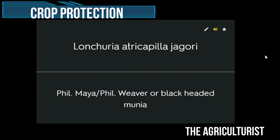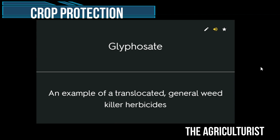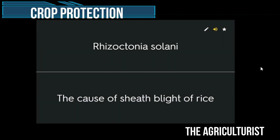Lonchura atricapilla — Philippine mayna weaver or black-headed munia. Lamellate — scarab beetles have this type of antennae. Glyphosate — an example of a translocated general weed killer herbicide. Rhizoctonia solani — the cause of sheath blight of rice.